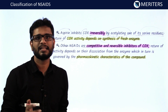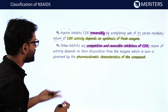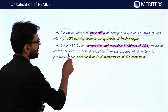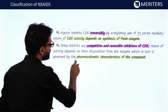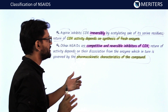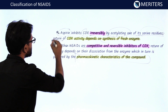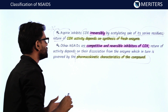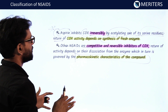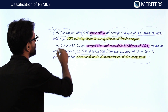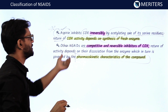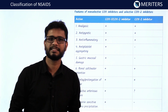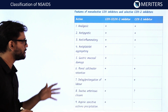All other NSAIDs are competitive and reversible inhibitors of COX. When the drug dissociates from the enzyme, the enzyme's function can be restored, depending on the pharmacokinetic characteristics of the compound. The key exam point: if asked which drug inhibits COX irreversibly, the answer is aspirin, because all other NSAIDs are competitive and reversible inhibitors.